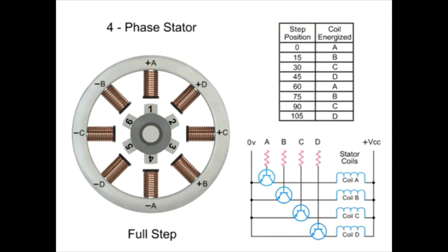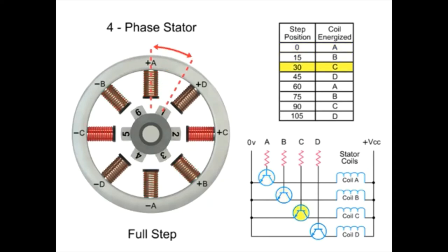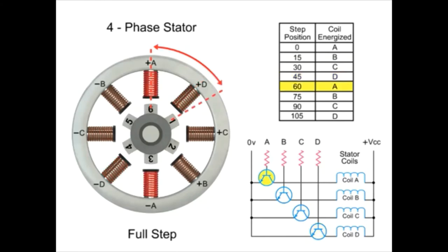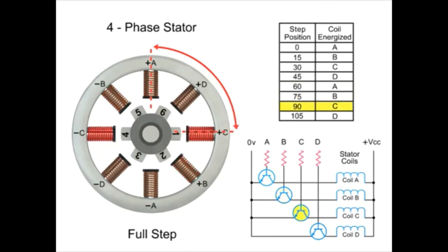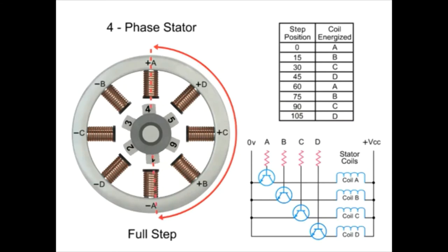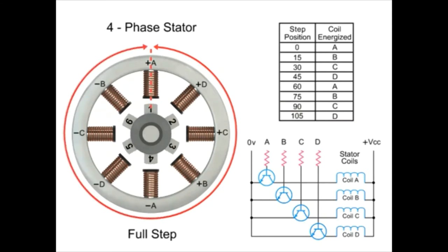Shaft rotation is achieved by energizing both windings while reversing the current alternately. Switching coils ABCD one coil at a time repetitively will rotate the rotor in the forward direction. In this example, there are six steps arranged on the rotor 60 degrees apart. 24 steps are required to make a full rotation at 15 degree increments.